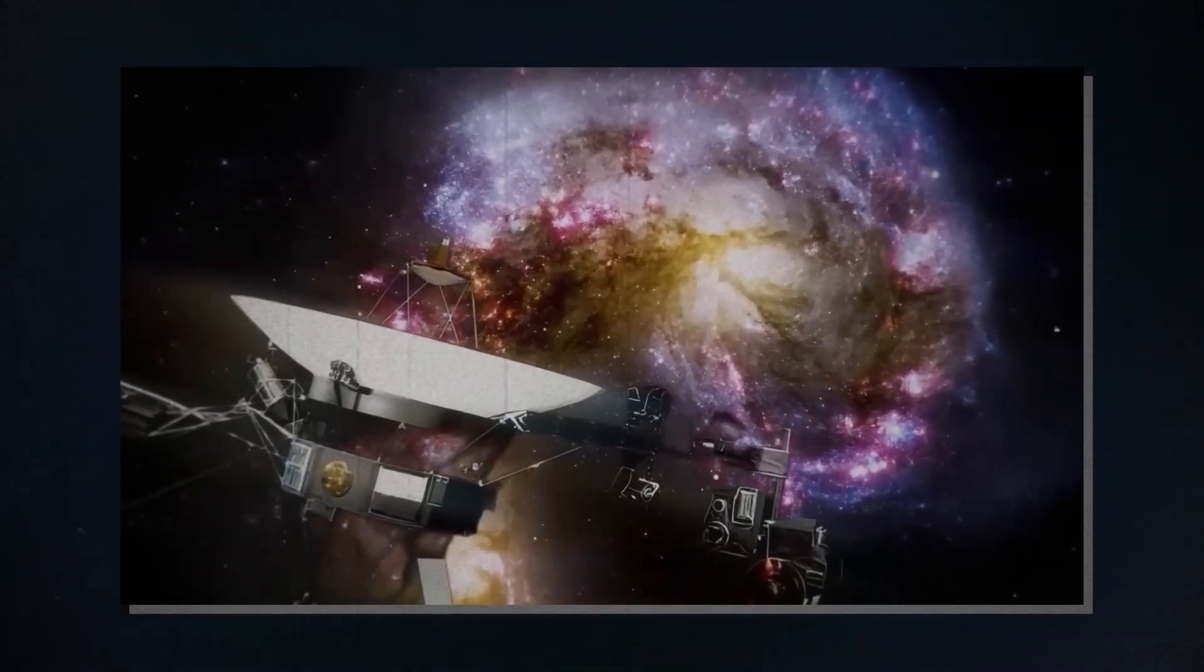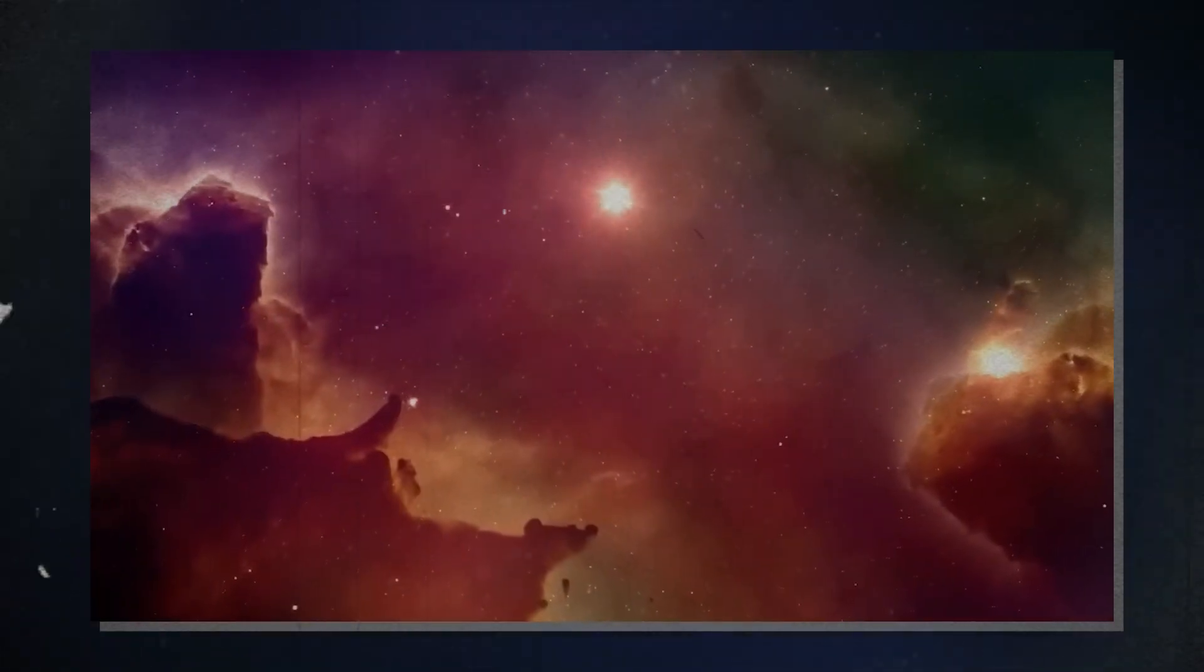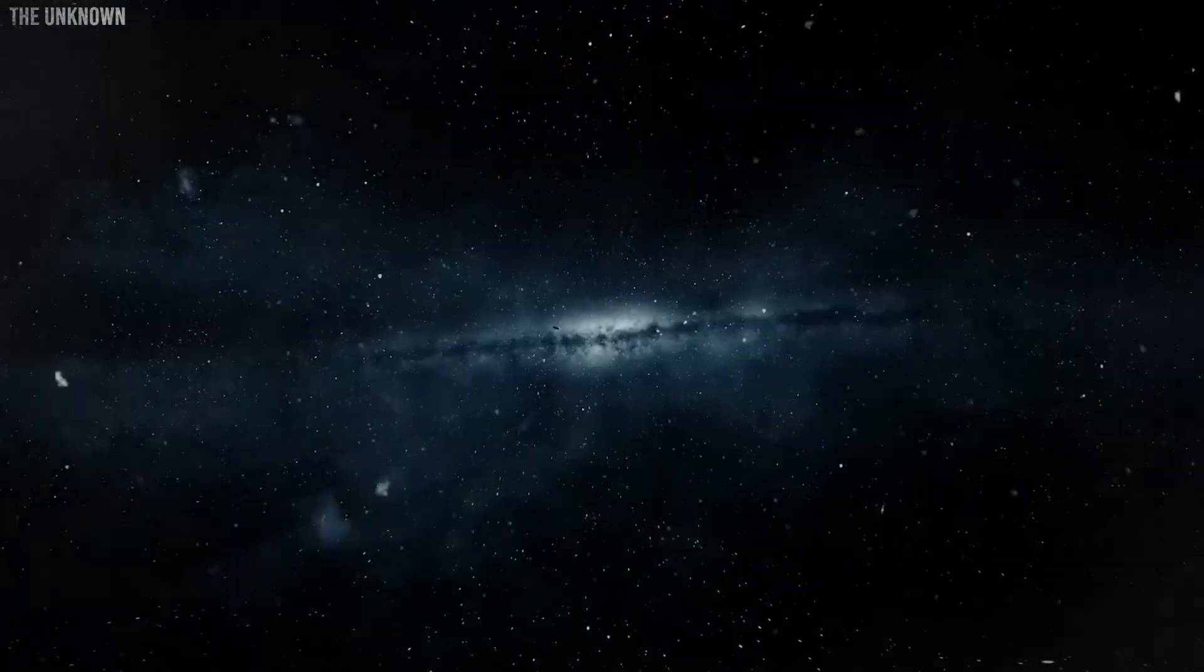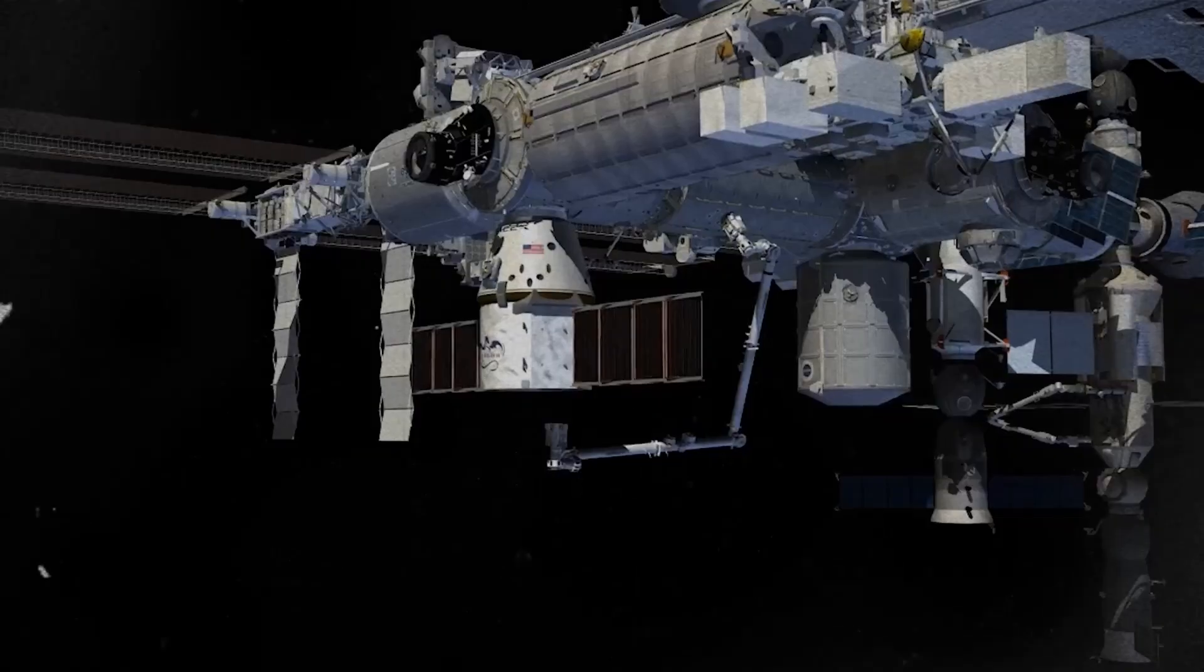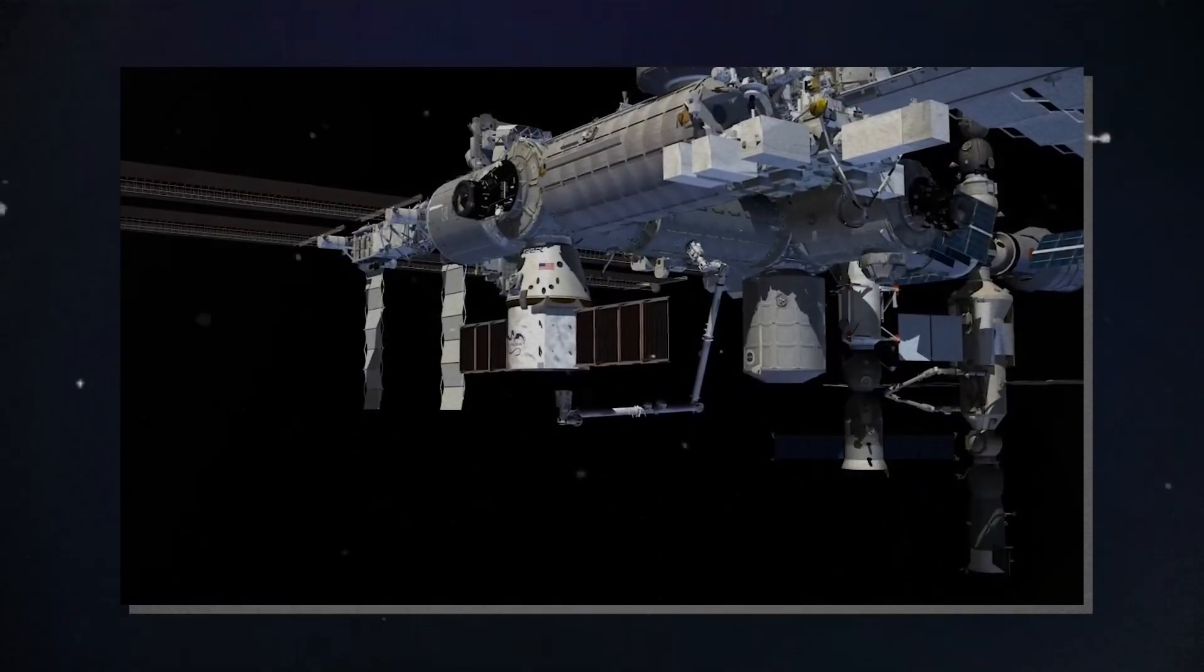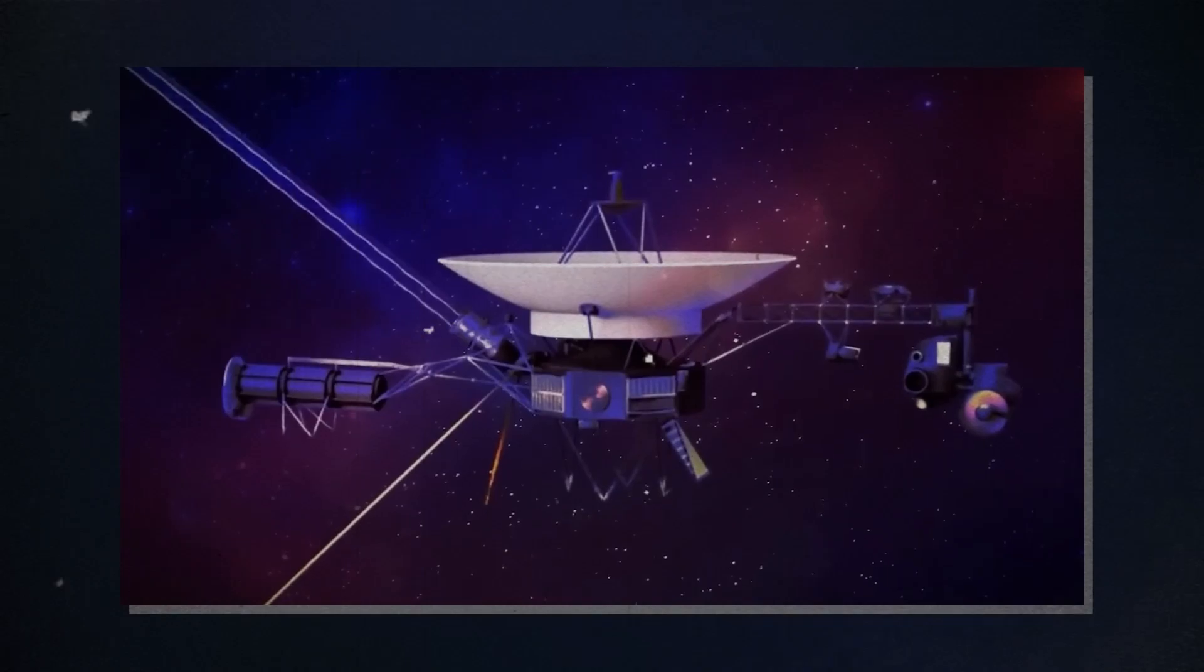This is a photo of Earth taken by Voyager, our home seen from nearly 4 billion miles away. It was the last picture Voyager 1 ever took. After that, its camera was permanently turned off to save power.